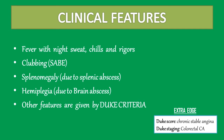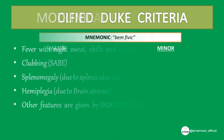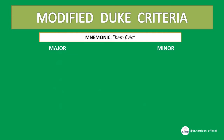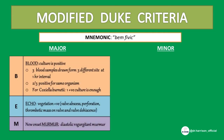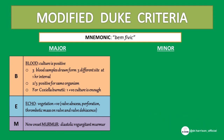Diagnosis of infective endocarditis is done by Duke criteria, easily remembered by the mnemonic BEMFIVIC. Major criteria: B for blood culture — 3 blood samples drawn from 3 different sites at 1-hour intervals, 2 of 3 should be positive for the same organism; for Coxiella burnetii, 1 positive culture is enough. E for echo — vegetation should be positive, revealing any one of: valve abscess, perforation, thrombotic mass on valve, or valve dehiscence. M for new onset murmur — diastolic regurgitant murmur.